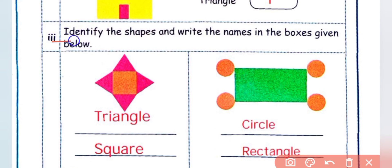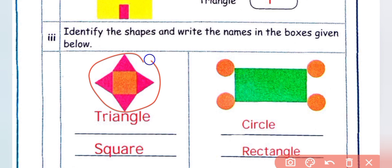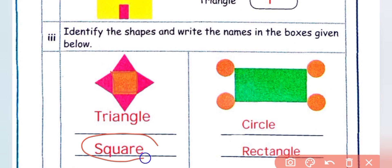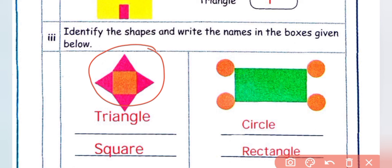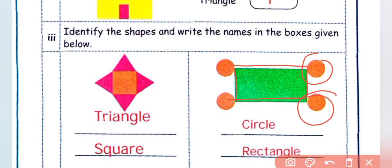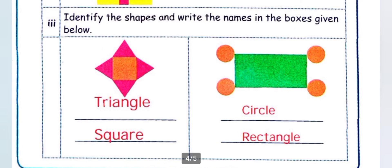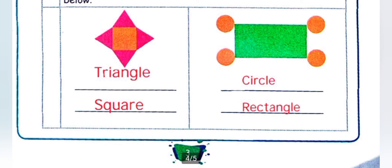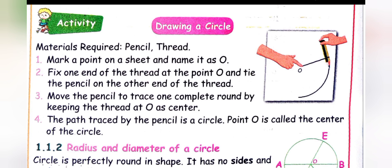Next, identify the shapes and write the names in the boxes given below. Here is a picture — use the shapes and write their names. You can write square and triangle. So in the picture the shapes are triangle and square. Next: rectangle and circle. That's all for this class. Thank you.